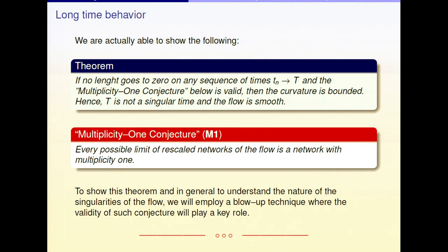So there is no singularity at time big T. Which means that at every singularity, some catastrophic event must happen — a region collapses down, or a curve is disappearing — so there is a change of structure.